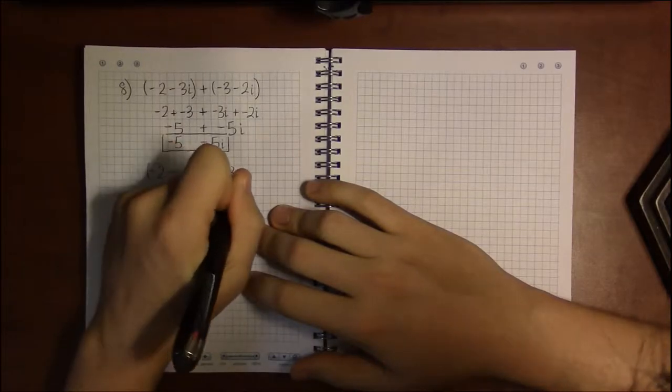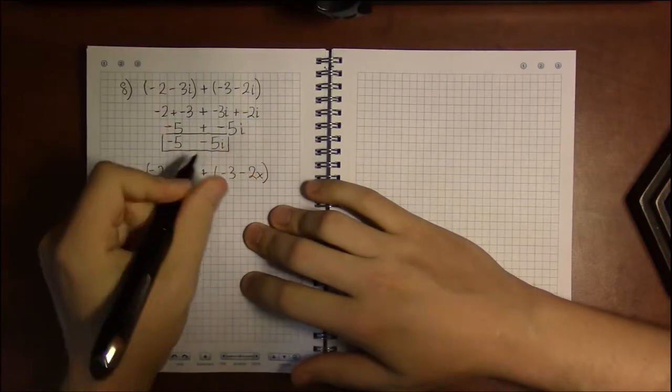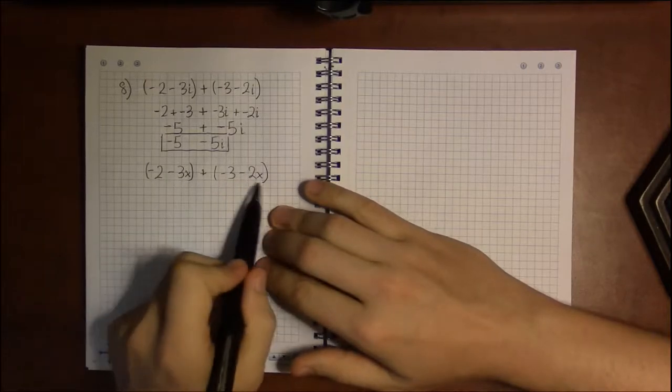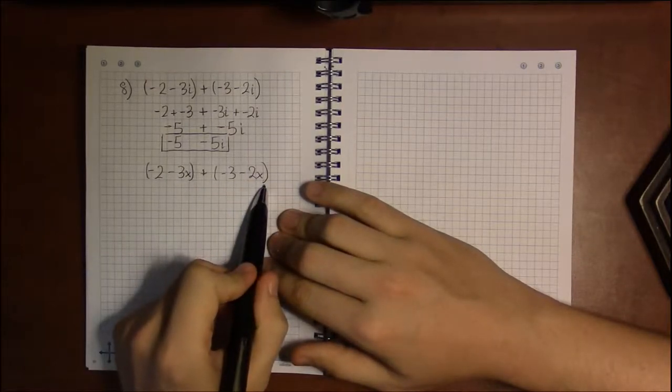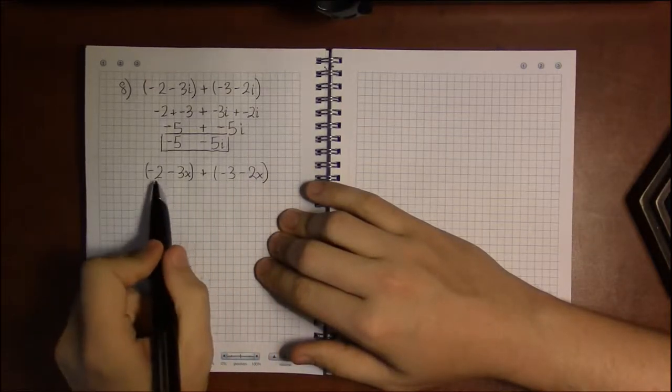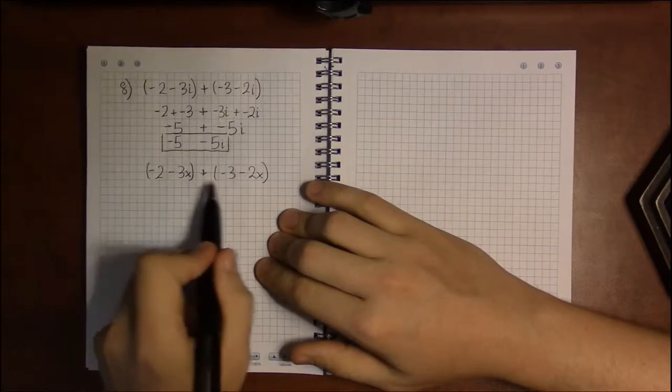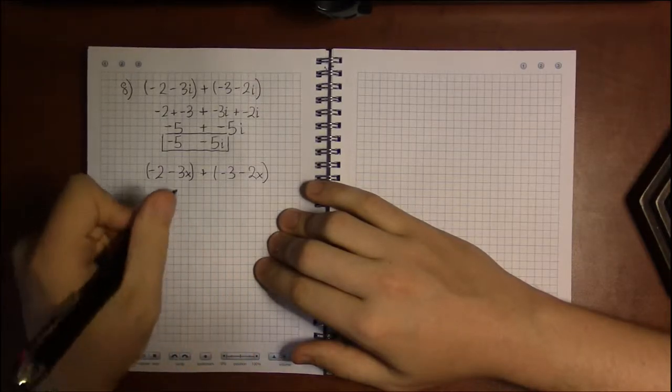To saying, well, don't think about it as i, just think about it as a variable. Think about it as a variable x. How would you solve this? Well, the two like terms are minus 2 and minus 3.